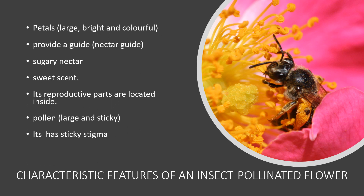The insect-pollinated flower must have large, bright, and colorful petals. Its petals must provide a guide for the insect to locate the sugary nectar, giving off a sweet smell or sweet scent. This feature is called the nectar guide.